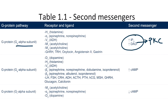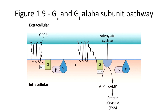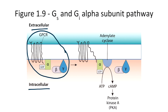Now let's go through the GS and the GI alpha subunit pathways. This is Figure 1.9, which outlines the normal GS and GI alpha subunit second messenger pathways. This is the extracellular space and this is the intracellular space, and this is the G protein coupled receptor. Again, notice how the receptor interacts with the alpha, beta, and gamma subunits. The alpha subunit is bound to GDP. In this figure, we haven't labeled the alpha subunit GS or GI specifically, because they behave opposite to one another. However, both the GS and the GI alpha subunits regulate this pathway. For Step 1, you need to know that the GS pathway causes activation of cyclic AMP, and the GI pathway causes inhibition of cyclic AMP.